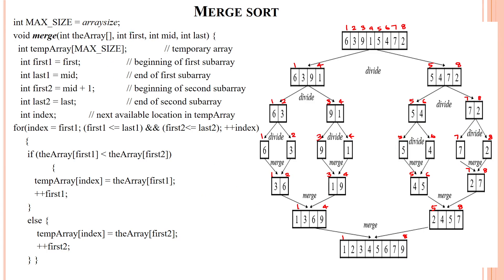For the final merge: the first sublist has first index 1 and middle index 4. The second sublist's first index is 5 and last index is 8. The index variable is initialized with the first index, which is 1. We are merging these two subarrays. We check: array of first index — index 1 — less than array of second index — index 5.